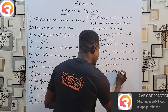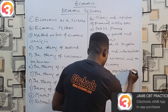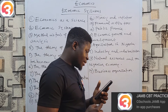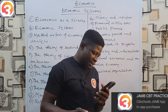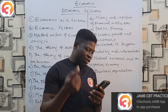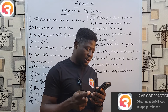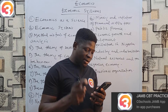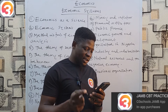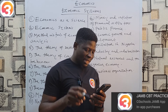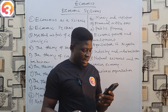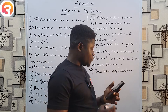Number nineteen is Business Organizations. Look at private enterprises and their problems, public enterprises and their problems, funding and management of business organizations, factors determining the size of firms, and privatization and commercialization as solutions to the problems of public enterprises.